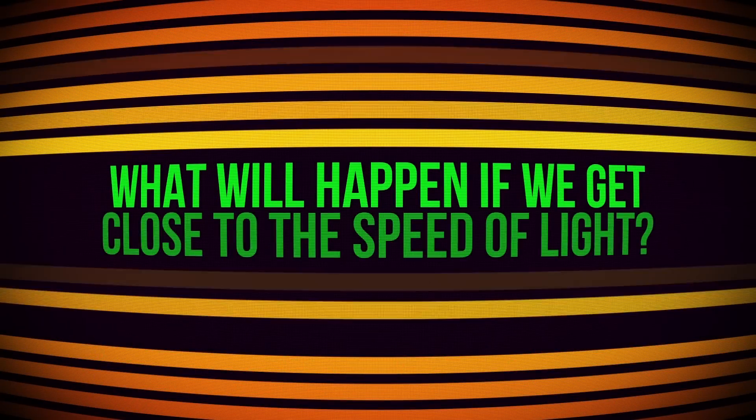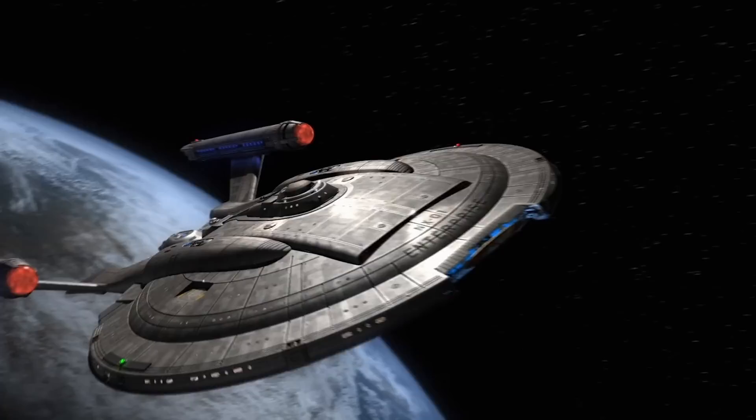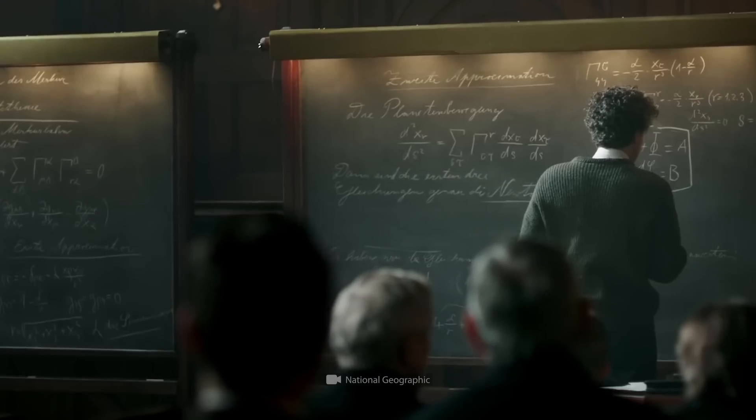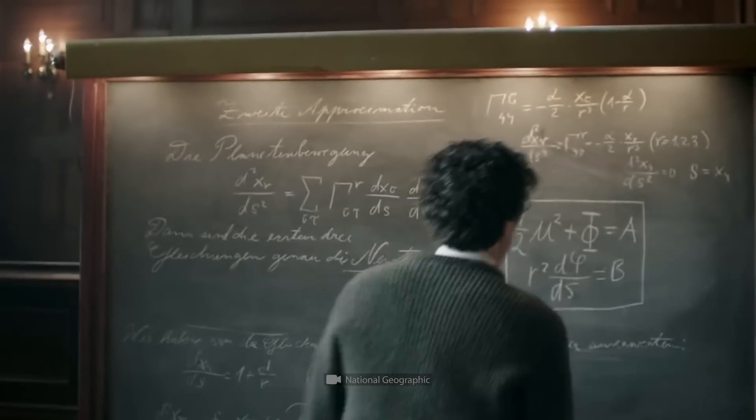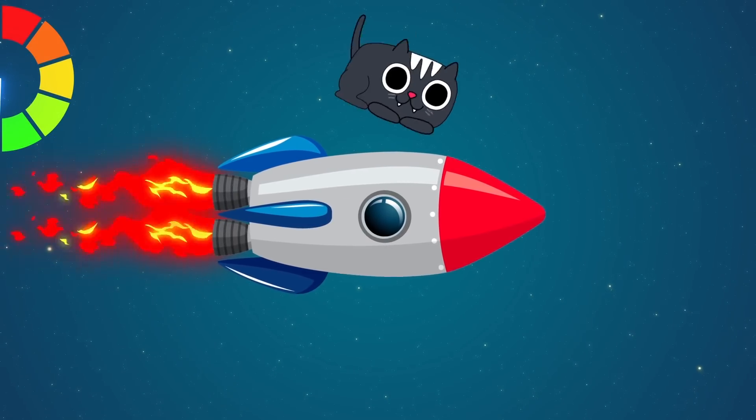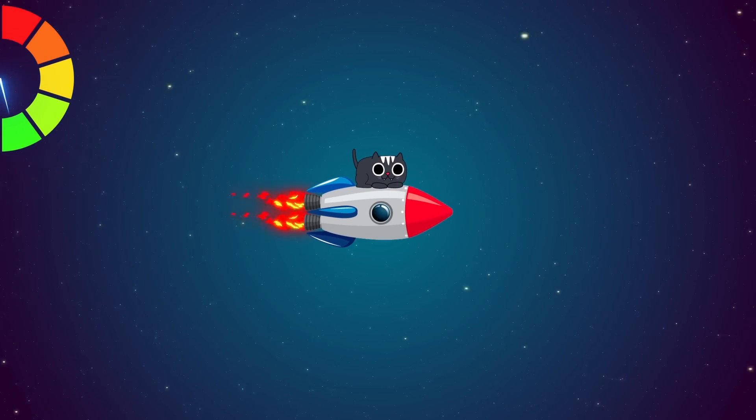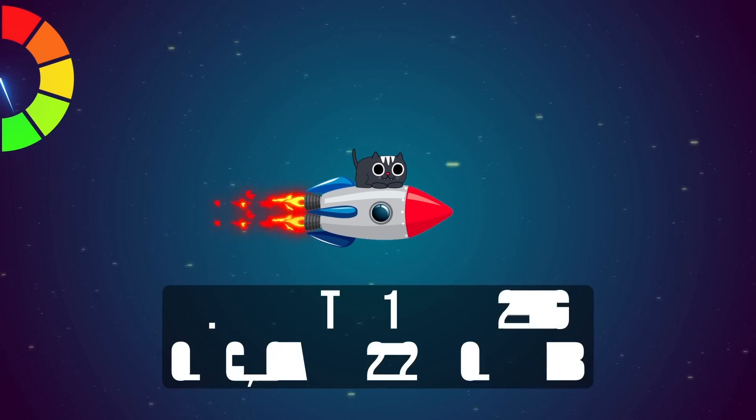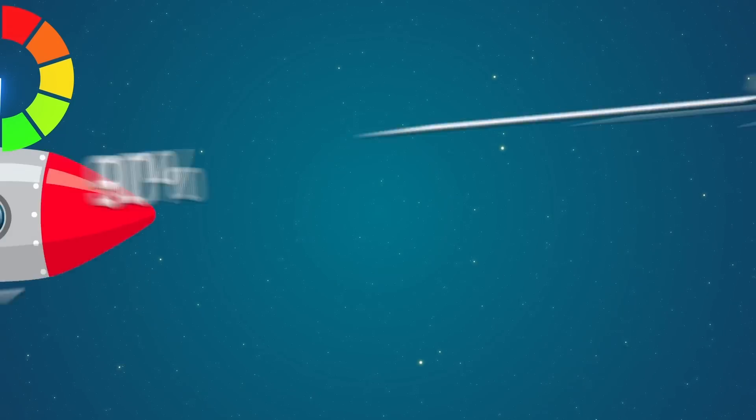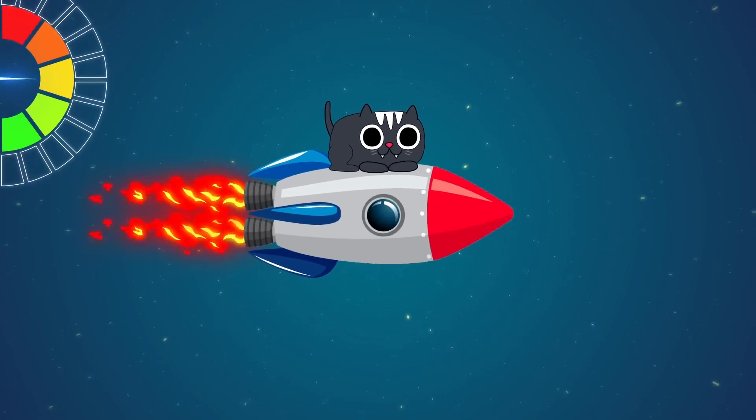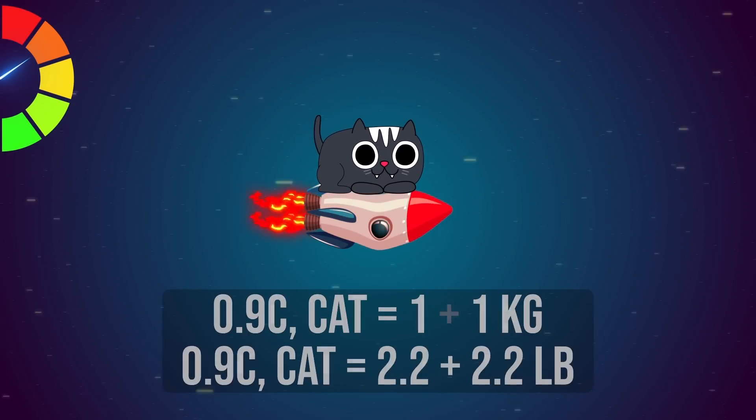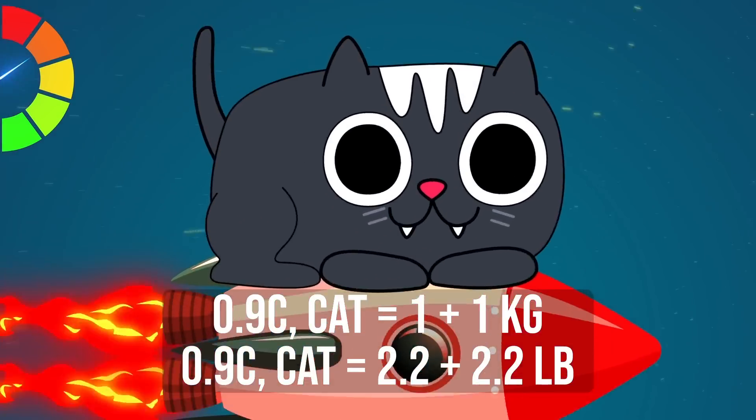What will happen if we find a way to get close to the speed of light? When accelerating, we'll fall into a trap that Albert Einstein also warned us about. This guy is such a buzzkill. He does everything to ruin our plans. Let's put a stout, two-month-old kitten weighing one kilogram in a rocket. When it reaches one-fifth of the speed of light, our cutie will become 20 grams heavier. Can it be just because of the stress? But when the spacecraft breaks 90% of the speed of light, the kitty will be twice as heavy.